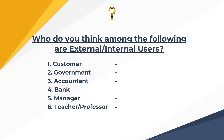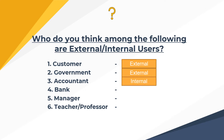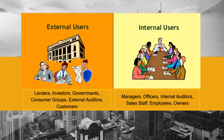From the words external and internal users, who among the following are external or internal? Customer — external. Government — external. Accountant — internal. Bank — external. Manager — internal. Teacher or professor — external. The external users include lenders, investors, government, consumer groups, external auditors, and customers. Internal users include managers, officers, internal auditors, sales staff, employees, and owners.